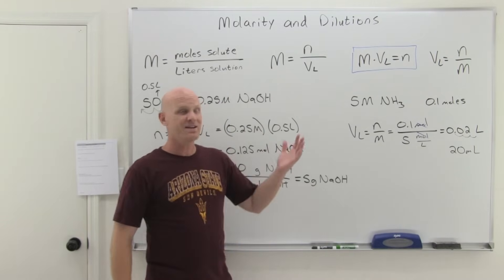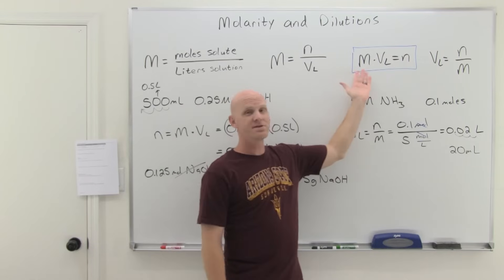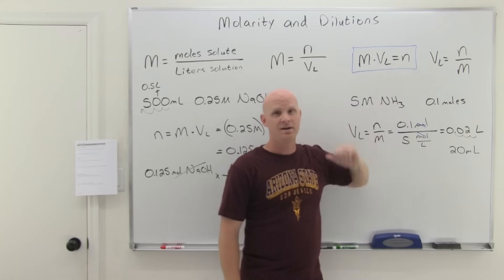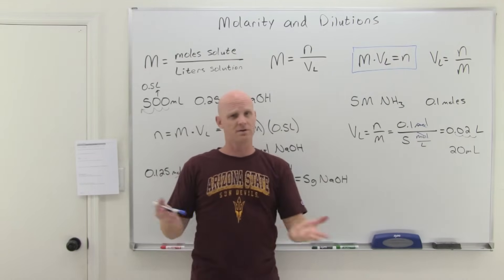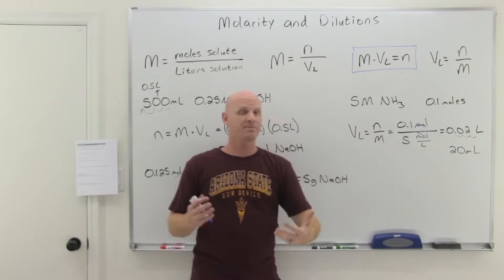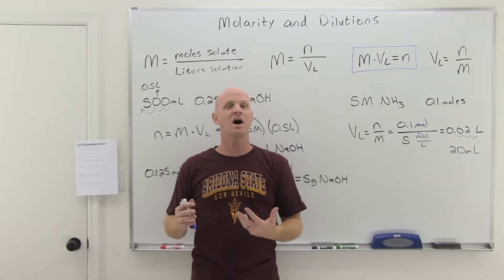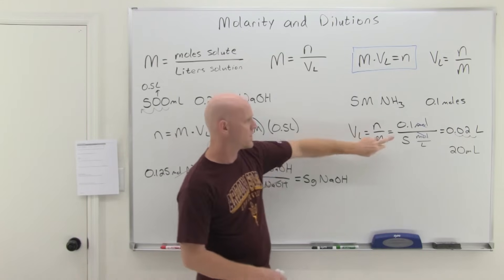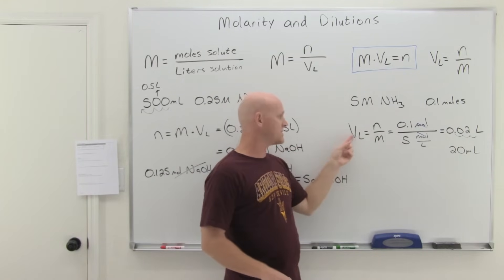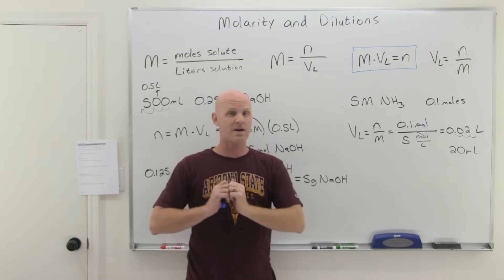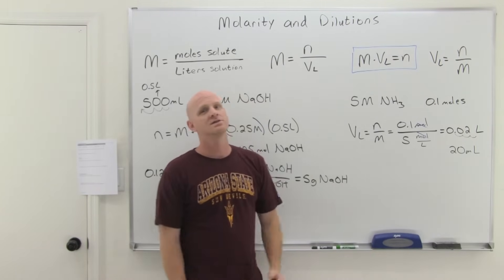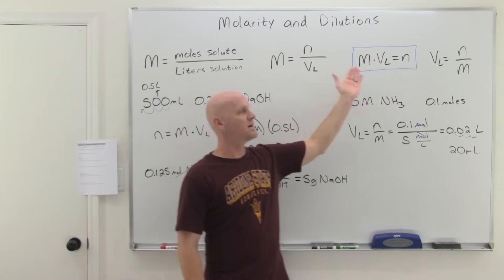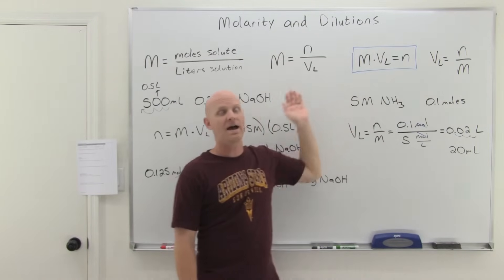So the answer is 0.02 liters or 20 milliliters. In this section, I actually prefer looking at the molarity equation as an algebraic expression. If you've got two of the three variables, you can solve for the third. Students often make more errors trying to do the dimensional analysis from scratch. If you already have the dimensional analysis approach down, that's fine — but if you're struggling or brand new to it, I'd recommend treating it as an algebraic expression.